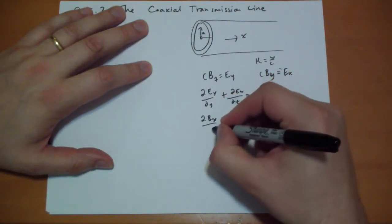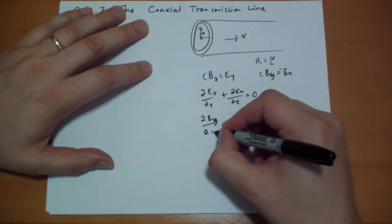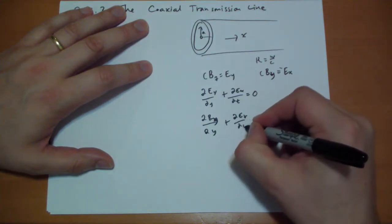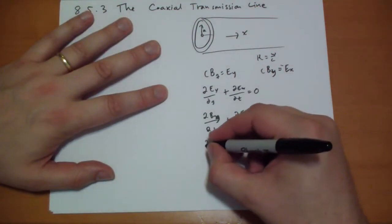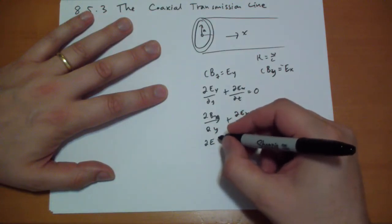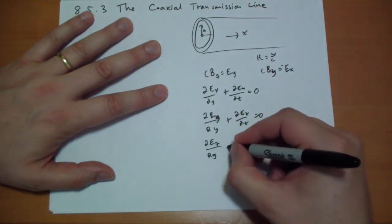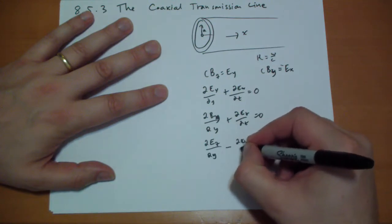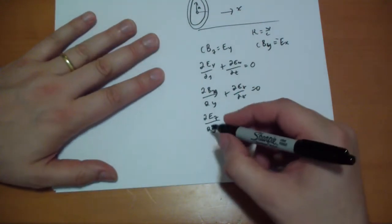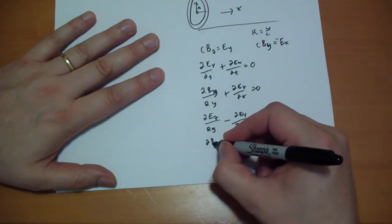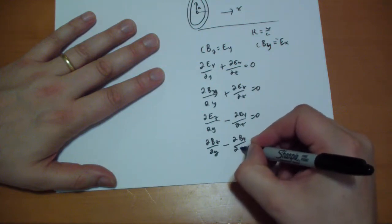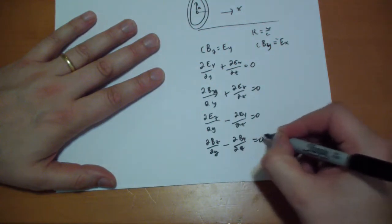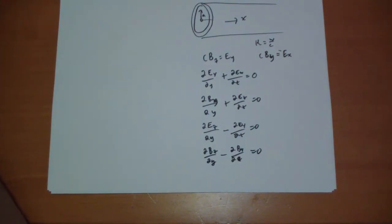The divergence of the magnetic field has to be dy by dy plus dEz by dz, it has to also equal zero. And then we have the curls have to be equal to zero as well. So dEz by dy minus dEy by dz has to equal zero. And the curl of the magnetic field dBz by dy minus dBz has to equal zero. Those are the equations.